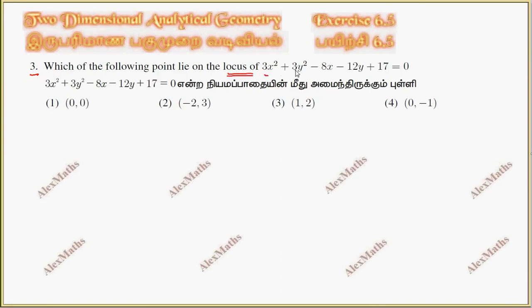Let's test if each point satisfies the equation. Starting with (0,0): substituting gives 17 = 0, which is not true. So we eliminate this option and try (-2,3).